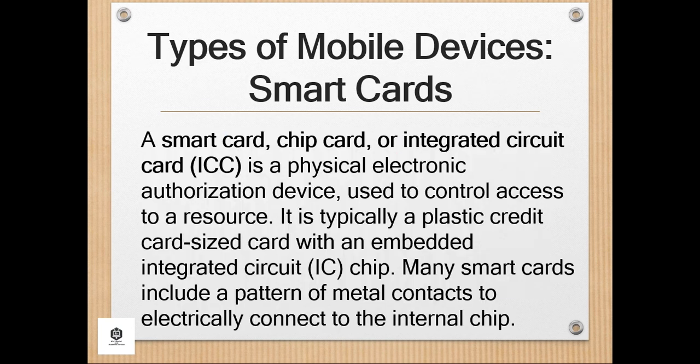The last type of mobile devices is the smart card. A smart card, chip card, or integrated circuit card, or ICC, is a physical electronic authorization device used to control access to a resource. It is typically a plastic credit card with an embedded integrated circuit or IC chip. Many smart cards include a pattern of metal contacts to electrically connect to the internal chip. Others are contactless, and some are both. Smart cards can provide personal identification, authentication, data storage, and application processing.